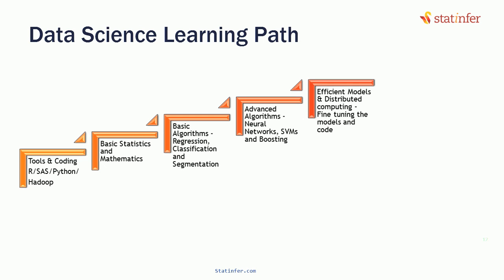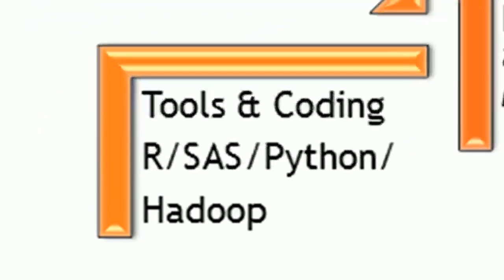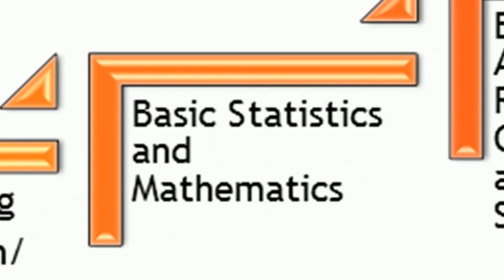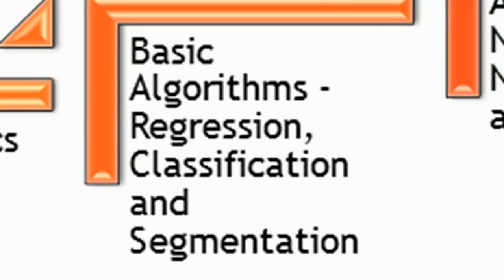We shall walk you through a structured path to learn data science and become a good data scientist. In step one, you could start with any of the tools like R, SAS, Python, Hadoop, etc. to run algorithms — preferably R or SAS. In step two, you will be looking into basic statistics and mathematics. In step three, you should learn basic algorithms like regression, classification, segmentation, etc.